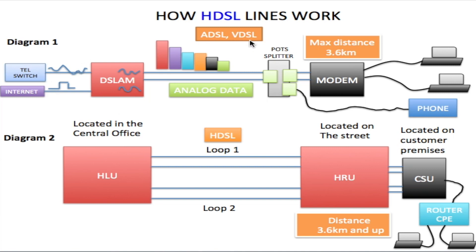For an ADSL and VDSL line, they both work on the same line as the telephone — two wires. You have a DSL line within the central office attached to those two wires, with a modem at the other end. The internet signal comes in as a digital signal, and it is converted to analog by the DSL line. You also have an analog signal coming in from the telephone switch to the DSL line, so now you have two analog signals. The DSL line modulates these two signals and sends them off on the telephone line.